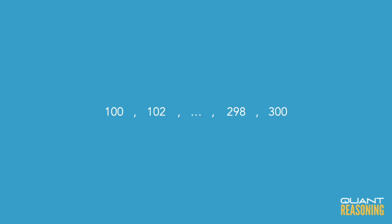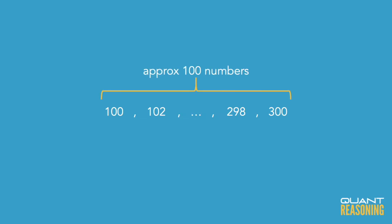Every other number is even, which means we're looking at about half of the numbers between 100 and 300 — around 100 numbers, since it's just every other number in a range of 200. We want the sum of all of those 100 numbers, and we know that the sum is going to be the product of the average multiplied by the number of terms.